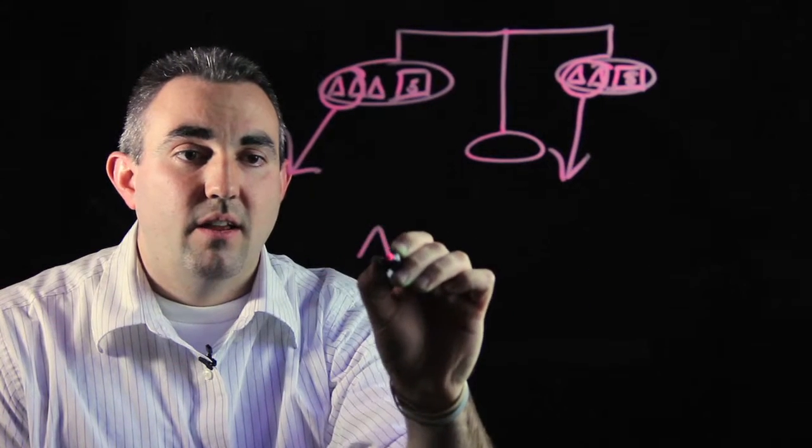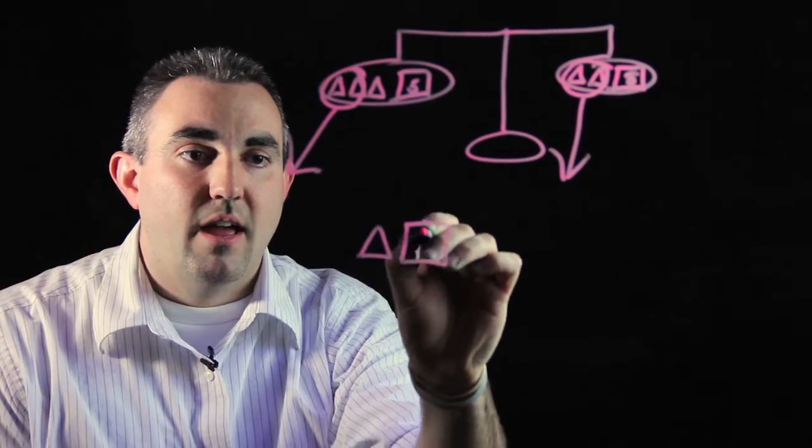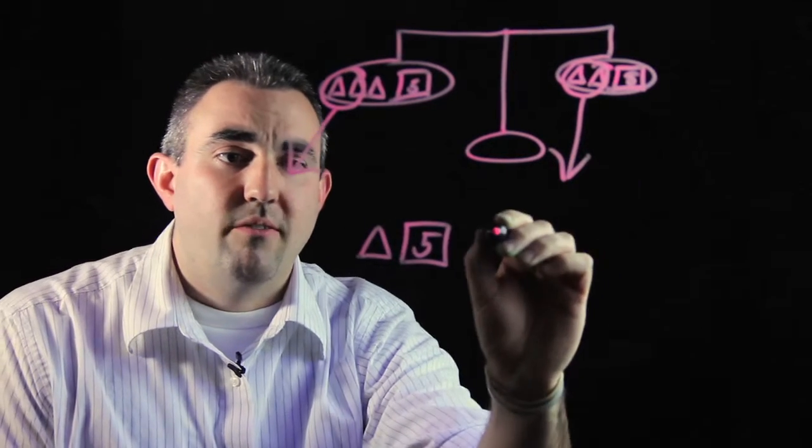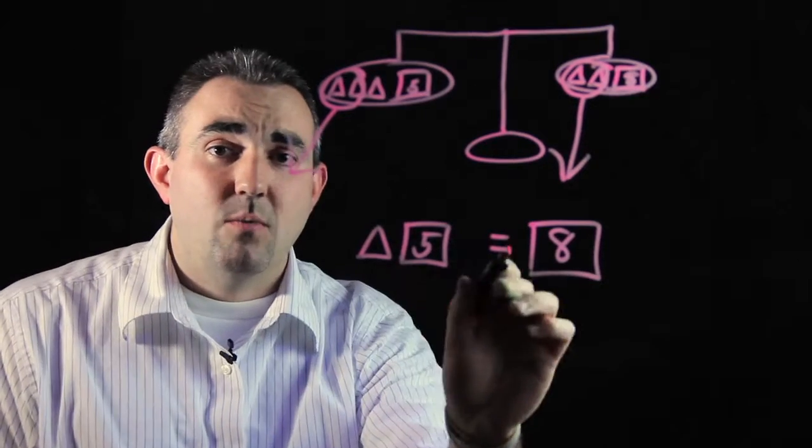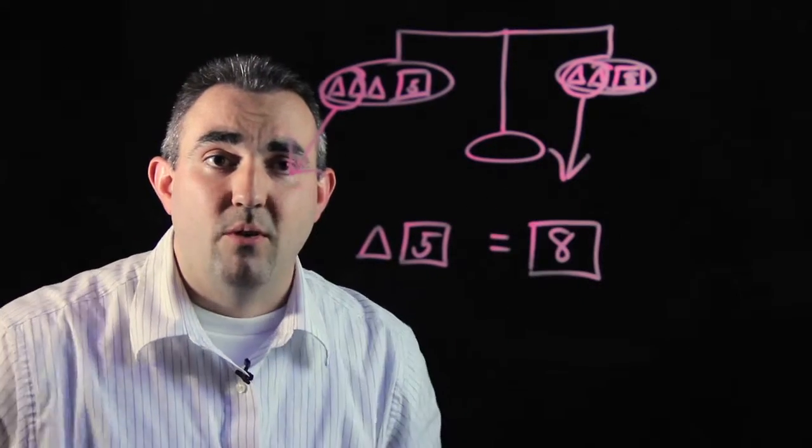What I'm left with on the left is one triangle and a five pound weight. What I'm left with on the right is an eight pound weight. These things are equal because we took the same amount from both sides.